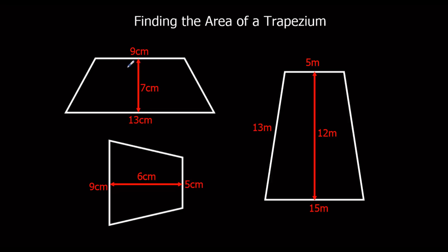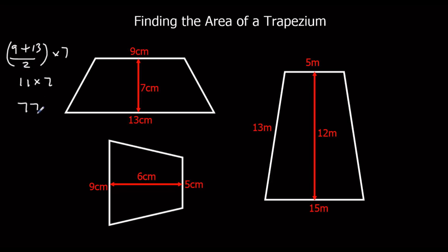Okay, so the first one. We should have nine plus thirteen over two, times seven. Nine plus thirteen is twenty-two, half of that is eleven. So eleven times seven is seventy-seven centimetres squared.